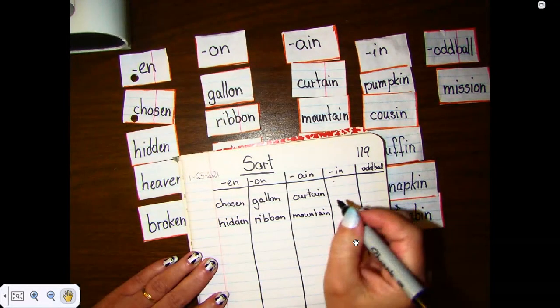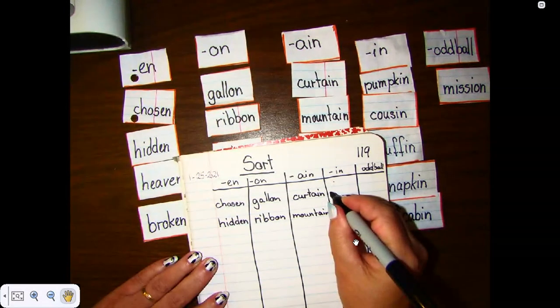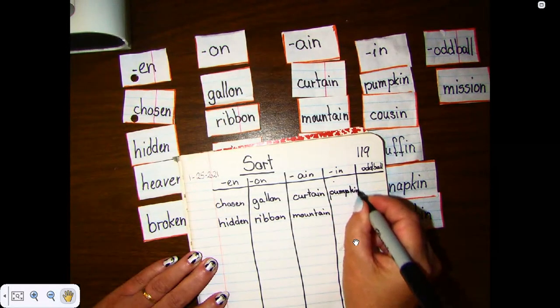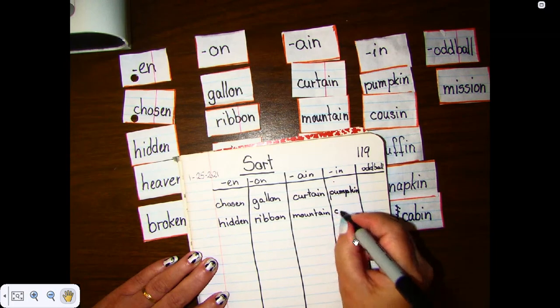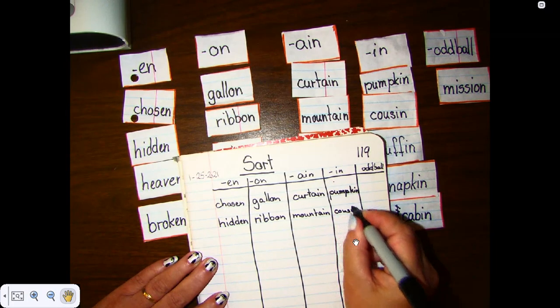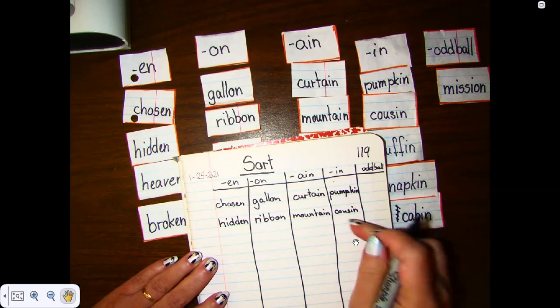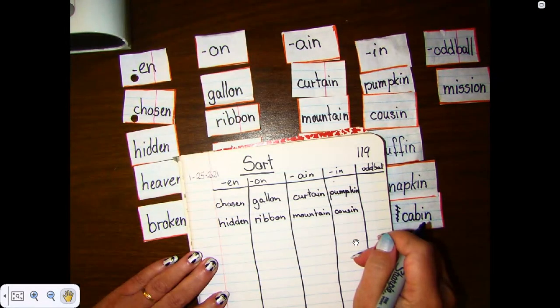Now I'm going to move to my I-N column. My first word is pumpkin. And my next word is cousin. Love my cousin. Go ahead and pause the video here and write down the other three words that belong in this column.